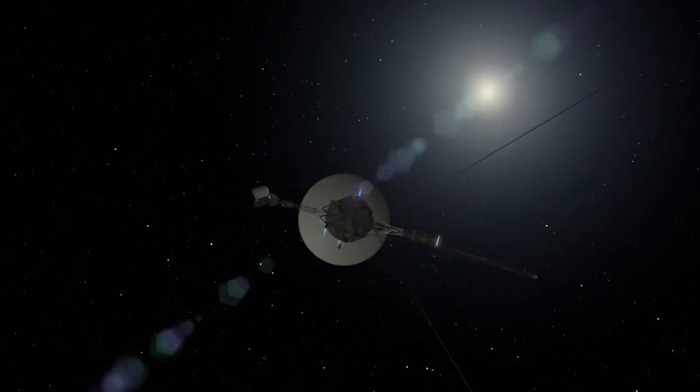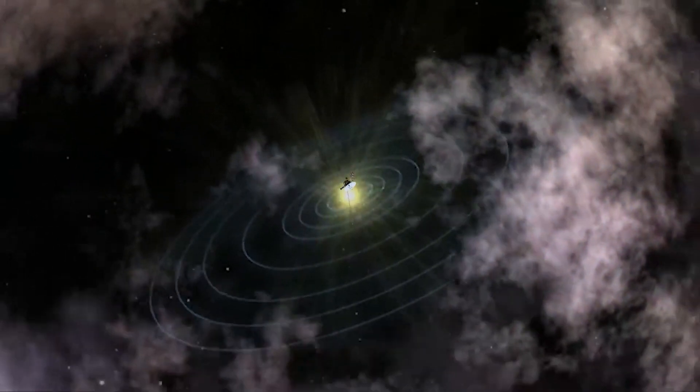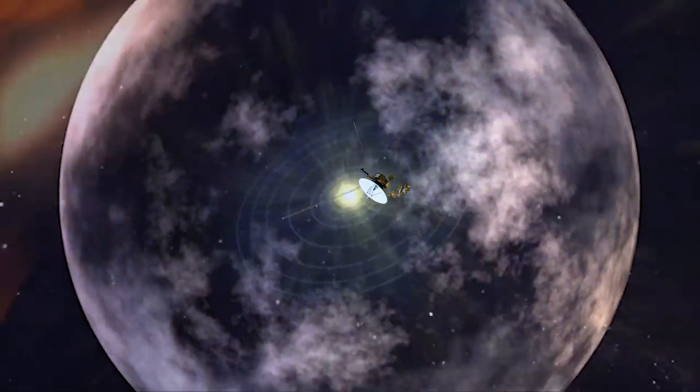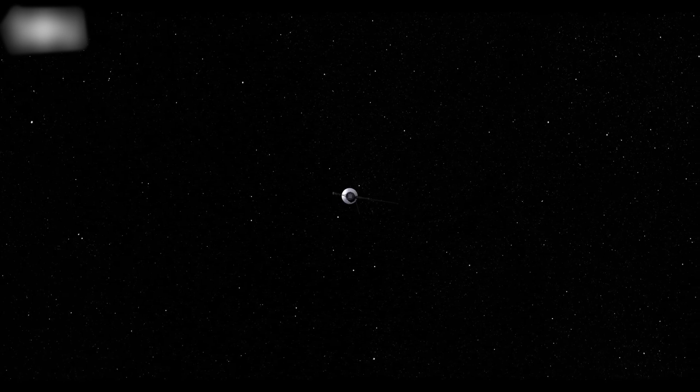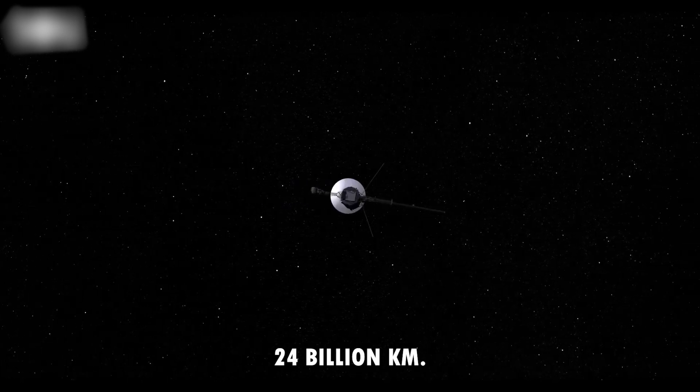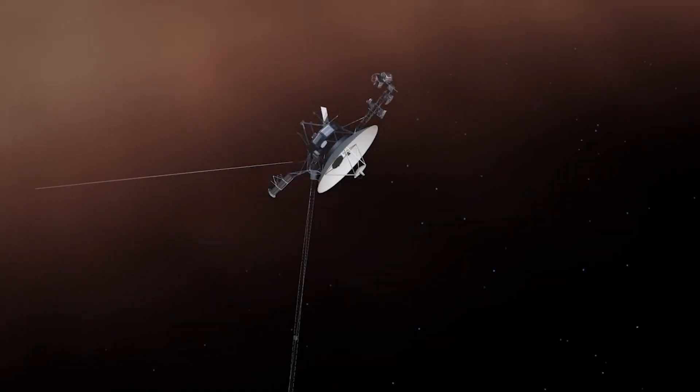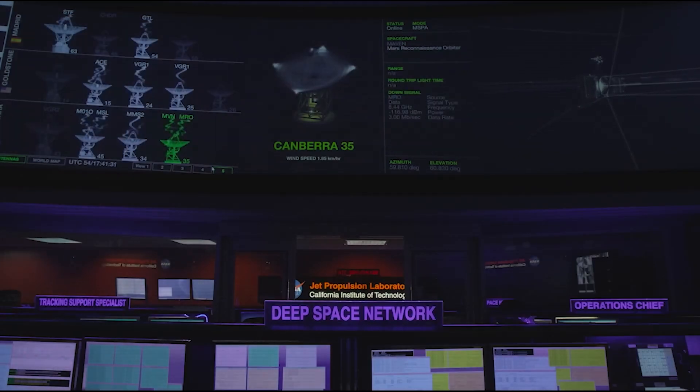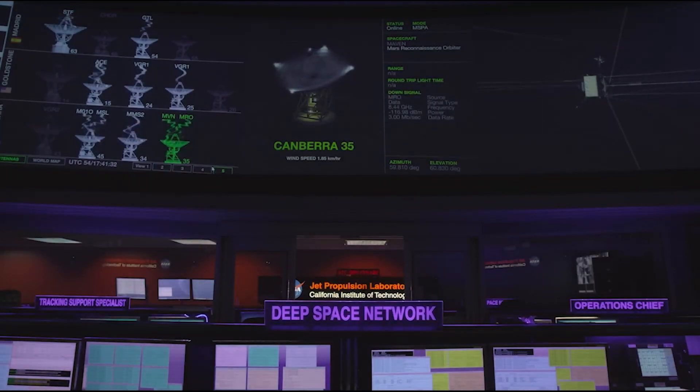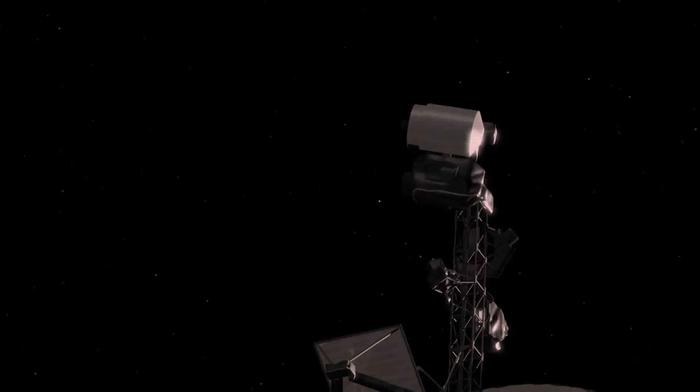NASA's Voyager 1 spacecraft is currently the farthest object sent into space by humans. It has reached a distance of 24 billion kilometers. But the concern of the scientists operating it has increased now. The spacecraft has not been functioning properly lately. It is sending strange data to the space agency's mission controllers that is not logical. In other words, the spacecraft is giving erratic data.